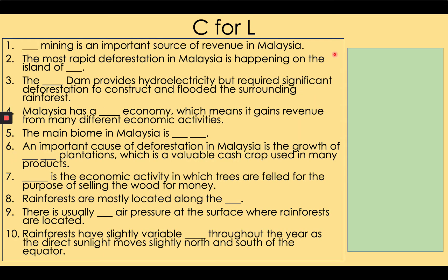1. Tin mining is an important source of revenue in Malaysia. 2. The most rapid deforestation in Malaysia is happening on the island of Borneo. 3. The Bakun Dam provides hydroelectricity, but it requires significant deforestation to construct and flooded the surrounding rainforest. 4. Malaysia has a diverse economy, which means it gains revenue from many different economic activities.